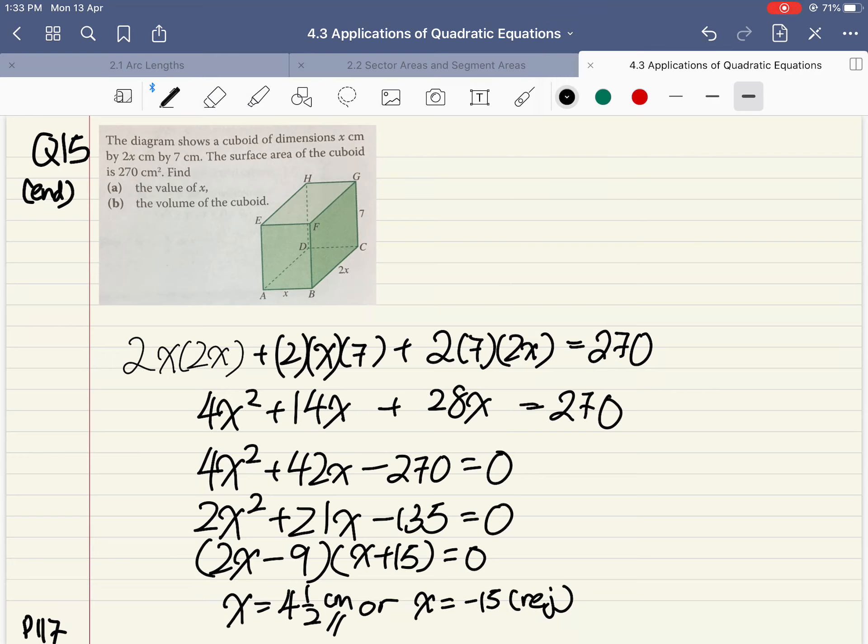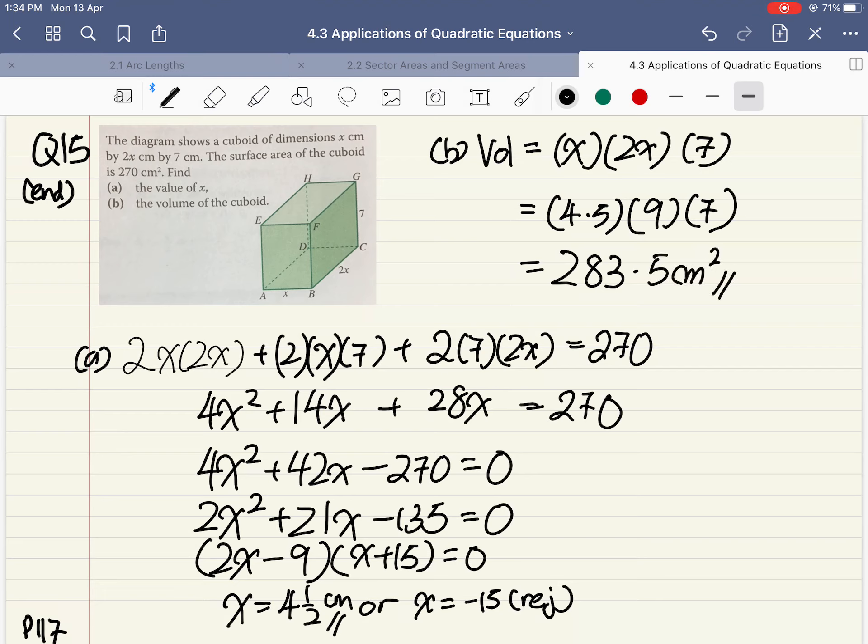Finally, let's move on to the volume. For part b, the volume is equal to length times breadth times height. We know that the x value equals 4 and a half, so we have 4.5 times 9 times 7, which is 283.5 cm cubed. And that concludes my examples for chapter 4.3.